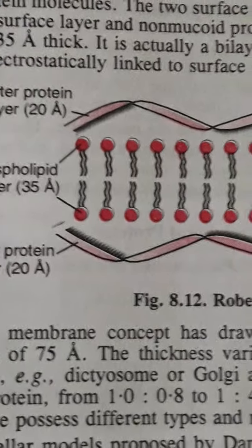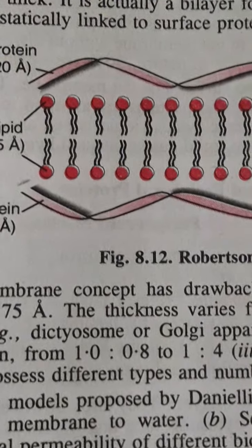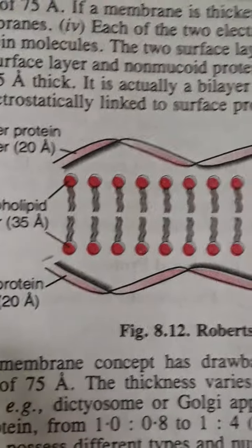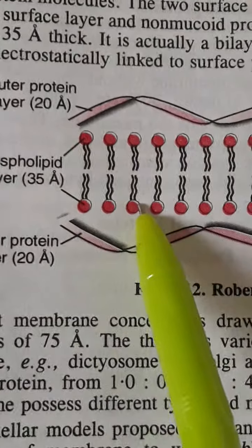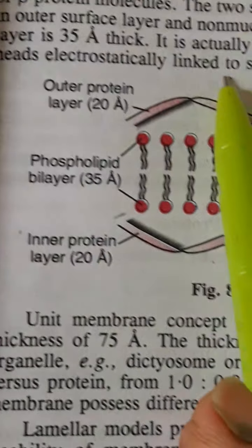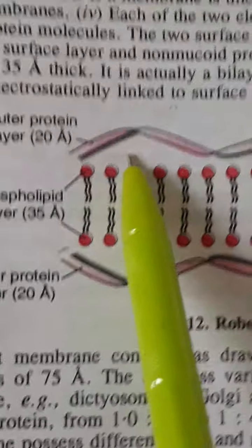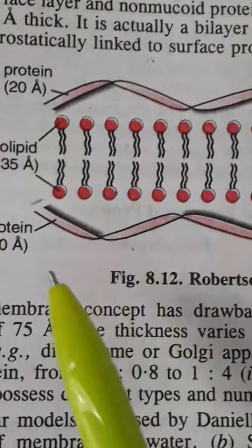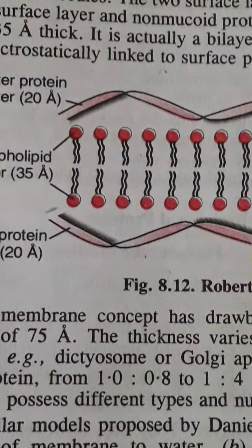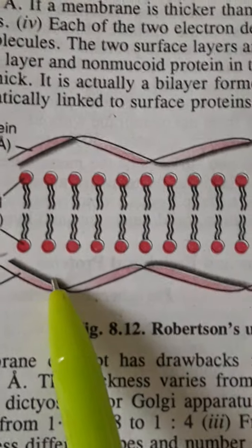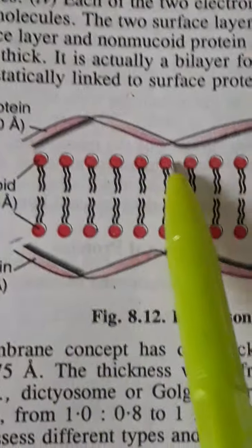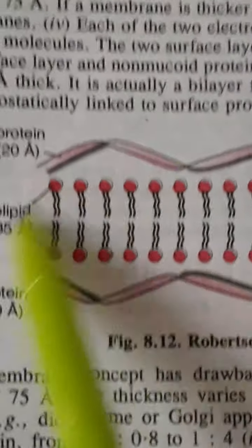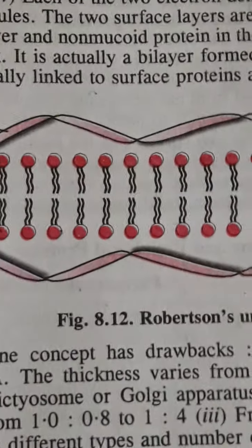Next is the Robertson model, proposed by J. David Robertson. According to this model, the lipid bilayer is covered by beta-proteins, unlike Danieli-Davson who said alpha-proteins. Robertson also called this the unit membrane structure. The structure shows the protein molecules on either side of the phospholipid bilayer.